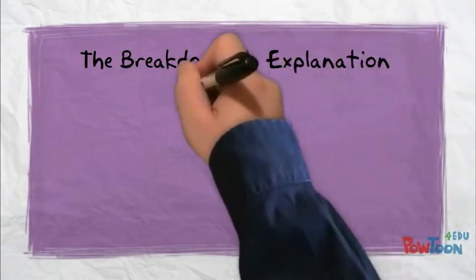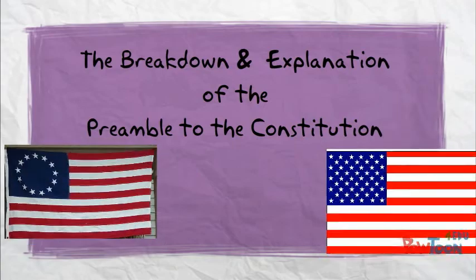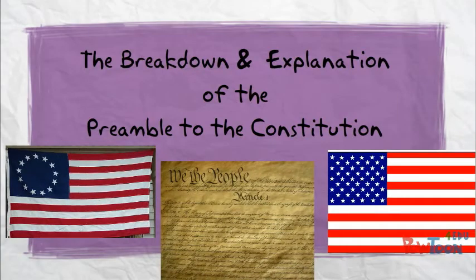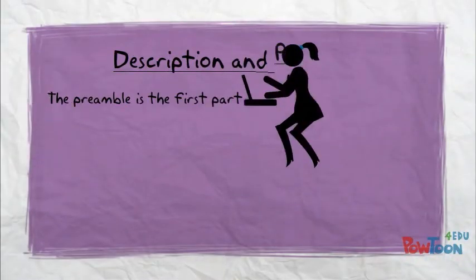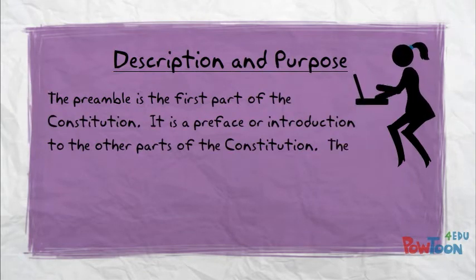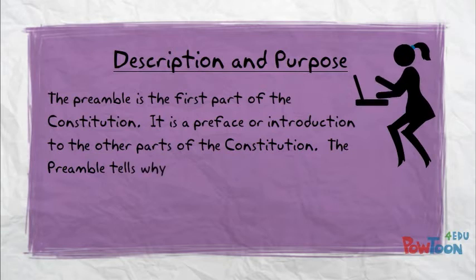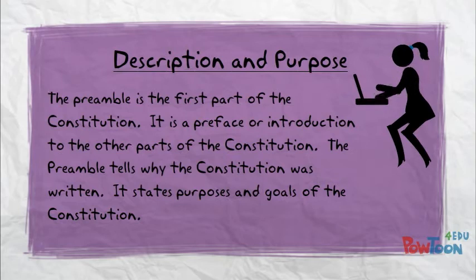The Breakdown and Explanation of the Preamble to the U.S. Constitution. The preamble is the first part of the Constitution. It is the preface or introduction to the other parts of the Constitution. The preamble tells why the Constitution was written — it states the purpose and goals of the Constitution.